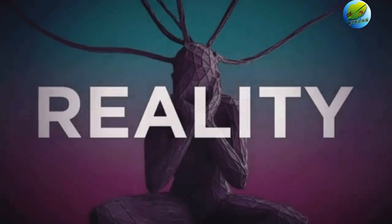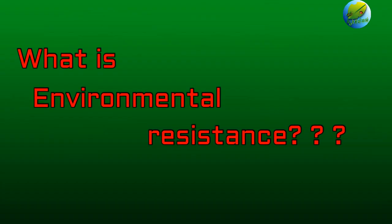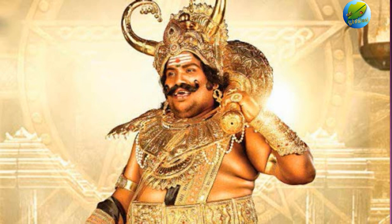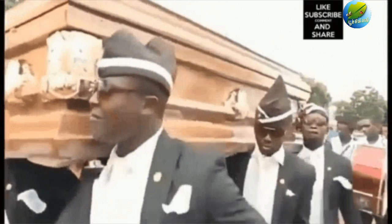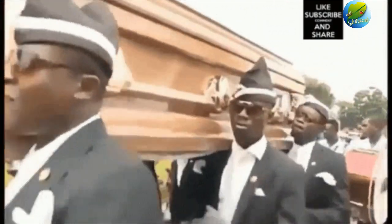In reality, only a fraction of progenies complete their life cycle due to environmental resistance. Environmental resistance is the physical and biological restraints that prevent a species from realizing its biotic potential. In other words, environmental resistance can be thought of as the force that maintains the existence of all living organisms on the planet in harmony.